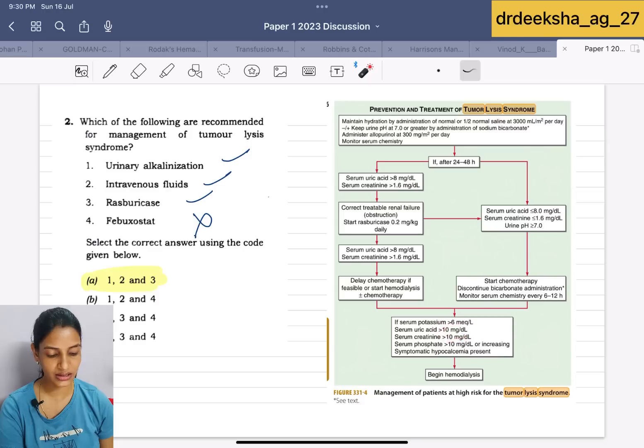If after 24 to 48 hours, uric acid and creatinine remains high, then you have to correct the treatable renal failure and you have to start the rasburicase here. If it is high, then you have to delay the chemotherapy and start the hemodialysis. In this case, urinary alkalinization, IV fluid and rasburicase is true. Febuxostat is not read in tumor lysis syndrome. Answer for this is 1, 2 and 3.